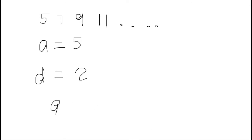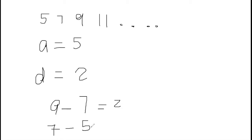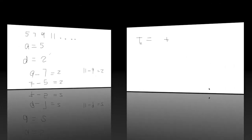You can say the third term minus the second term and you realize you're getting the same 2. Also, the second term minus the first term gives you 2 as well. There's a pattern where all of them are giving 2, so even the fourth minus the third gives you 2.